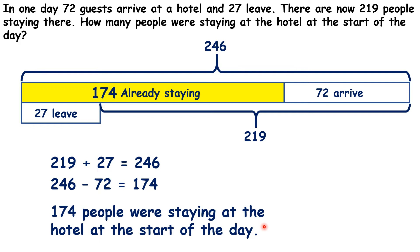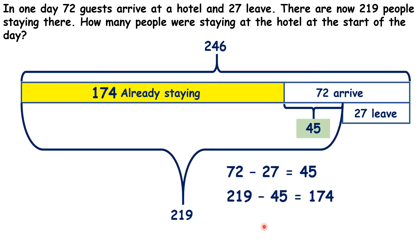So we have our answer, but is there any other way we could have worked this out? Is there a different way of representing this problem with a bar model? Well, let's look at this bar model for the same question. What did they do here?